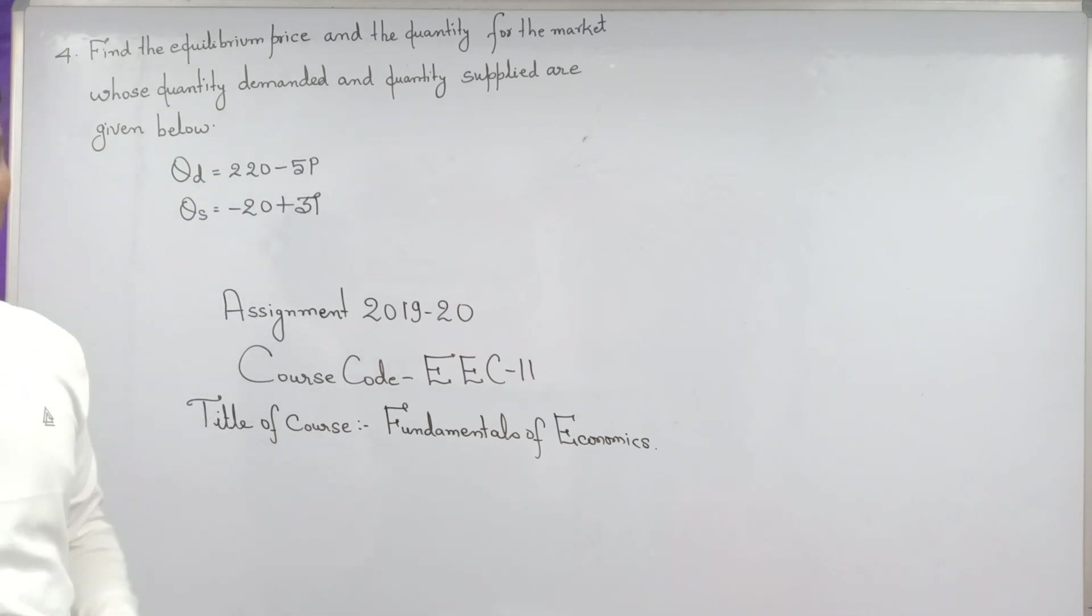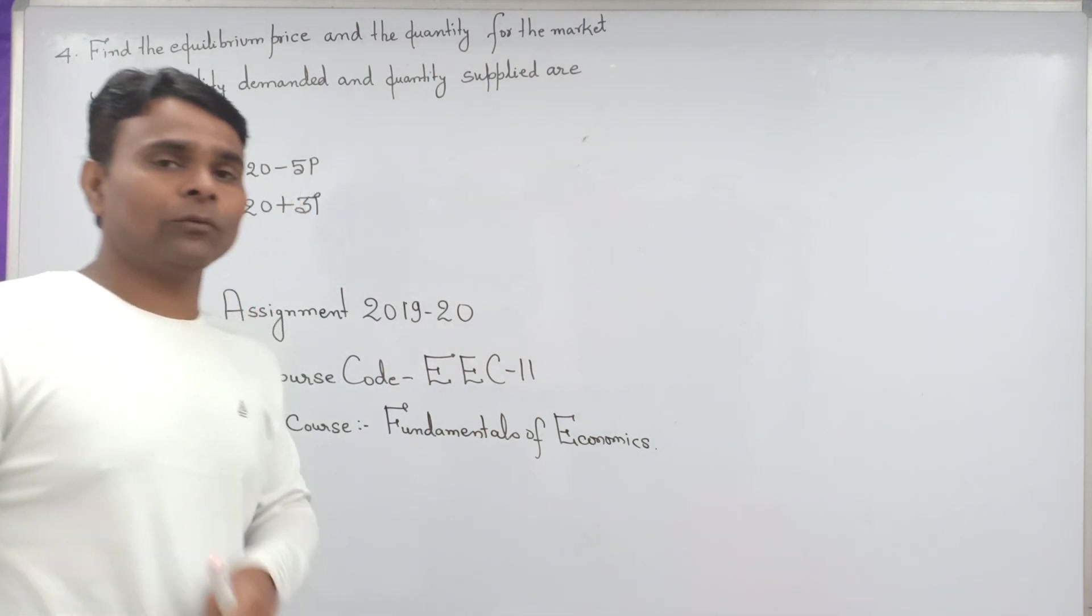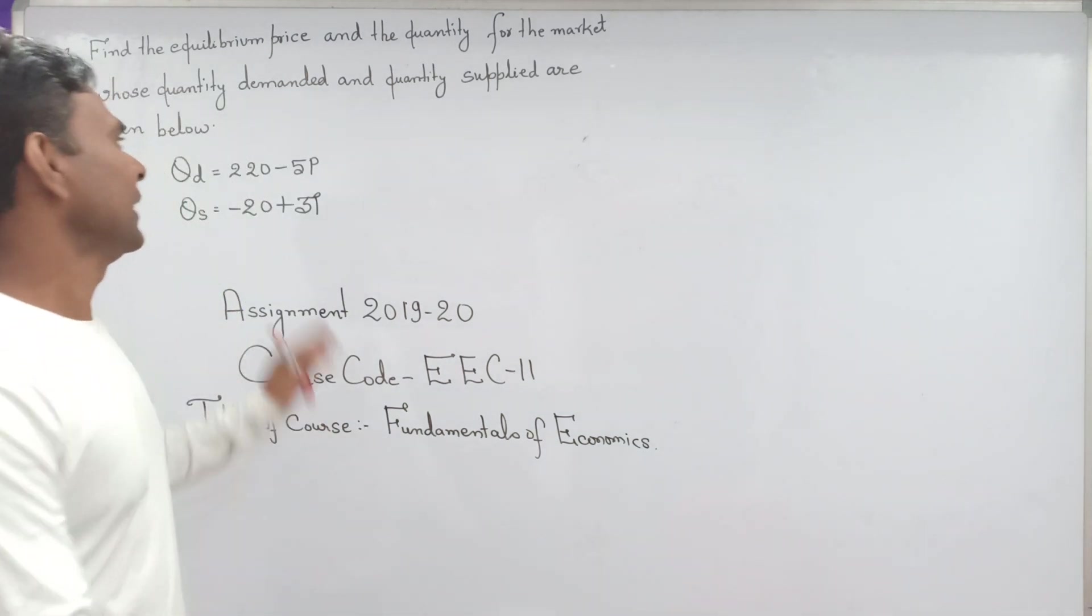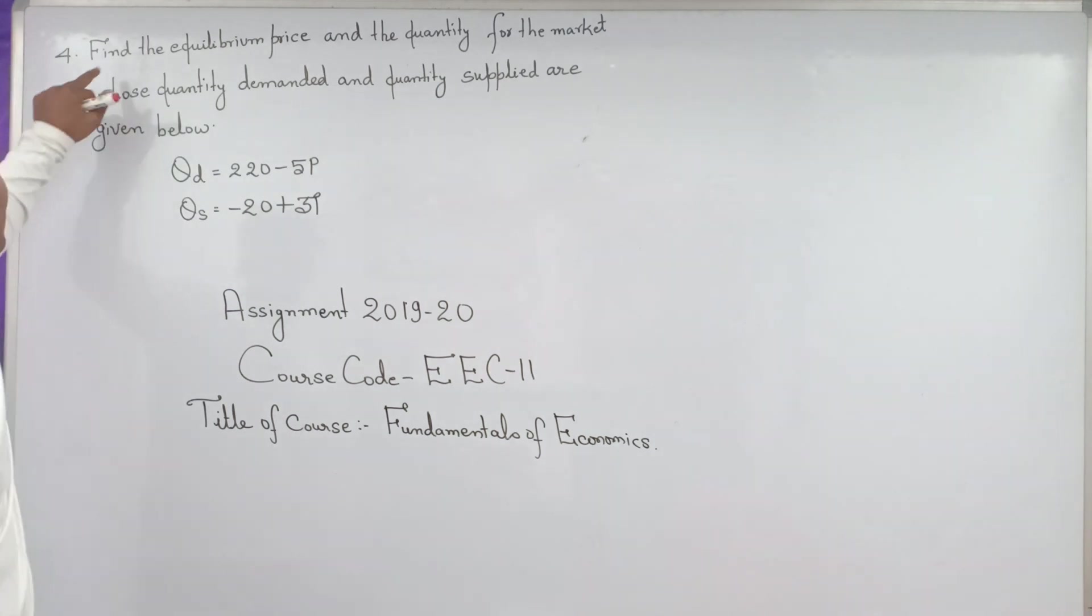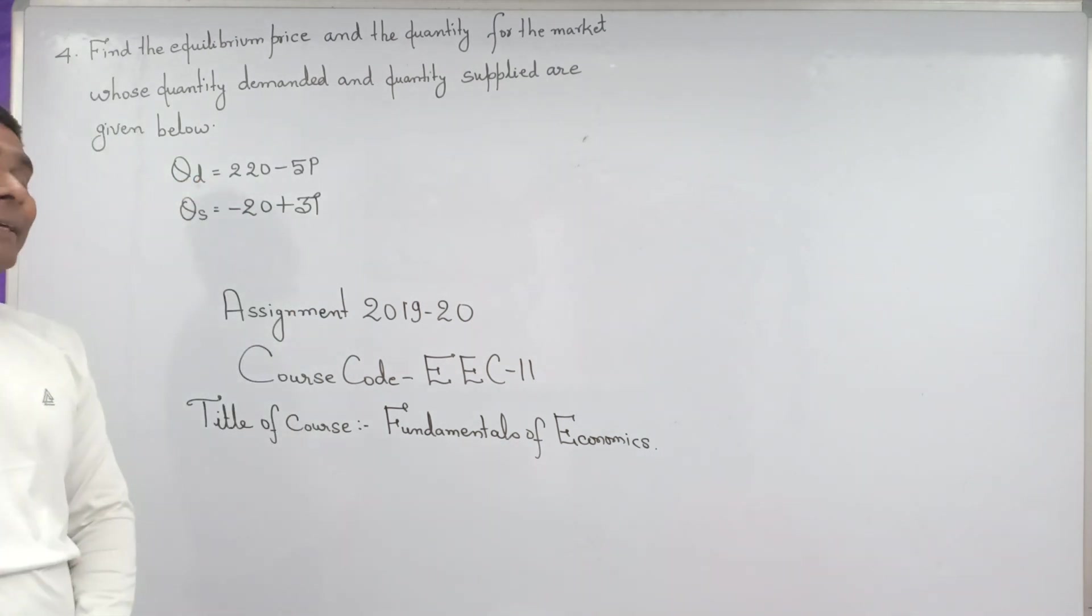This question is about equilibrium price and quantity. We have to find out equilibrium price and quantity from the given quantity demanded and given quantity supplied. The demand function is given as QD, and the supply function of market is given as QS.